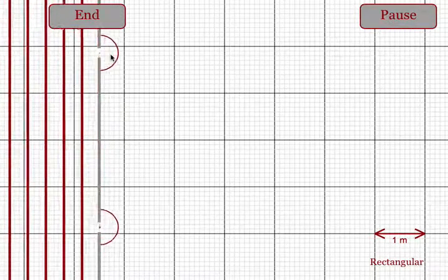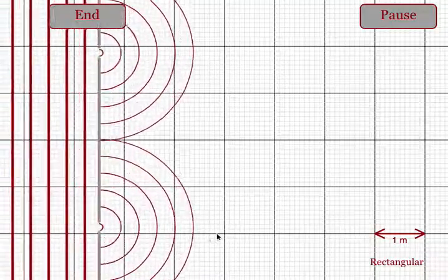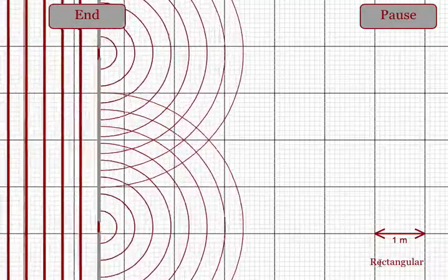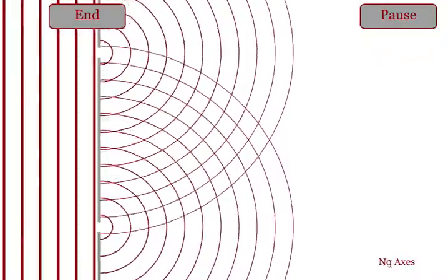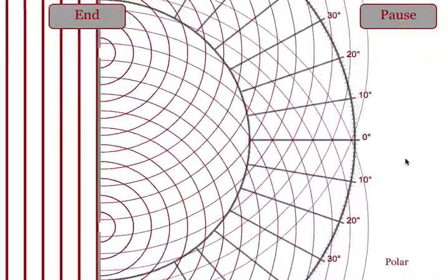After the waves pass through the diffraction grading, you can see they act as two sources of waves. Students at this point may want to switch to no-axes, or even better, they may want to switch to polar axes.